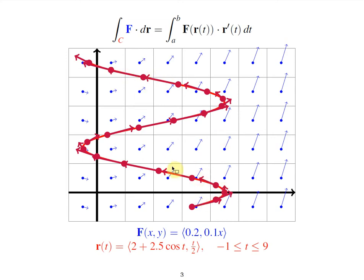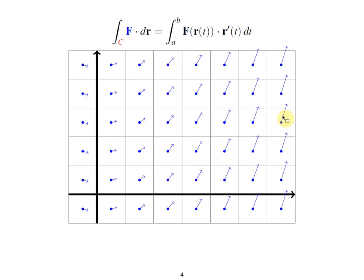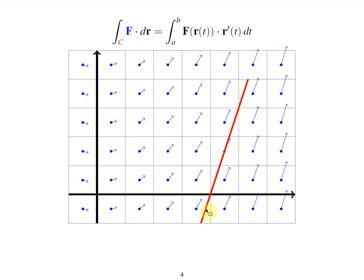Whether the value is positive or negative depends on how much the path you travel along agrees with the direction of the vectors. To illustrate this qualitatively, consider a red path C in a mostly northeast direction — there's mostly agreement with the arrows, basically parallel to these vectors — so traveling this direction you're going to get a very positive number. If you travel the other way, you'd get a negative number because the tangent vector along here always points toward the southwest while the blue vectors point to the northeast, so you're adding up all these negative numbers.